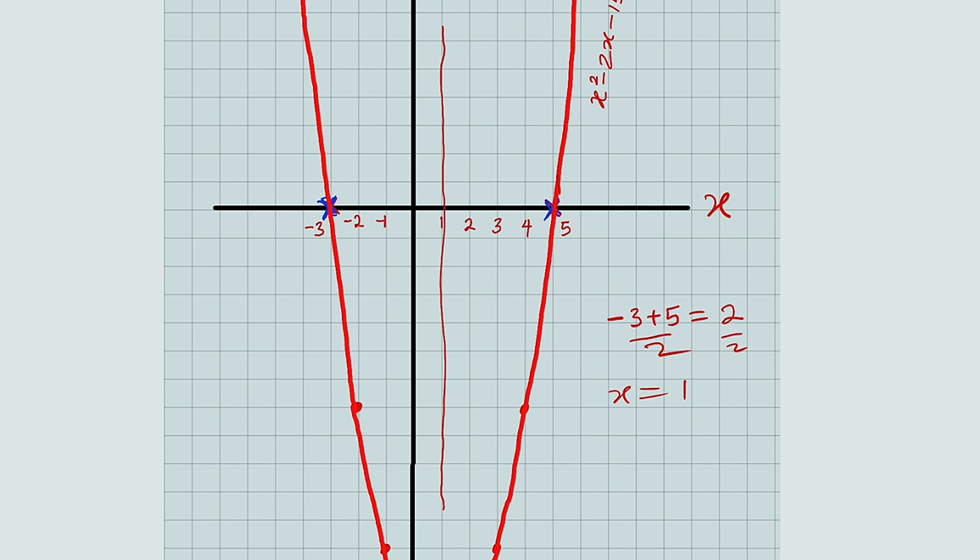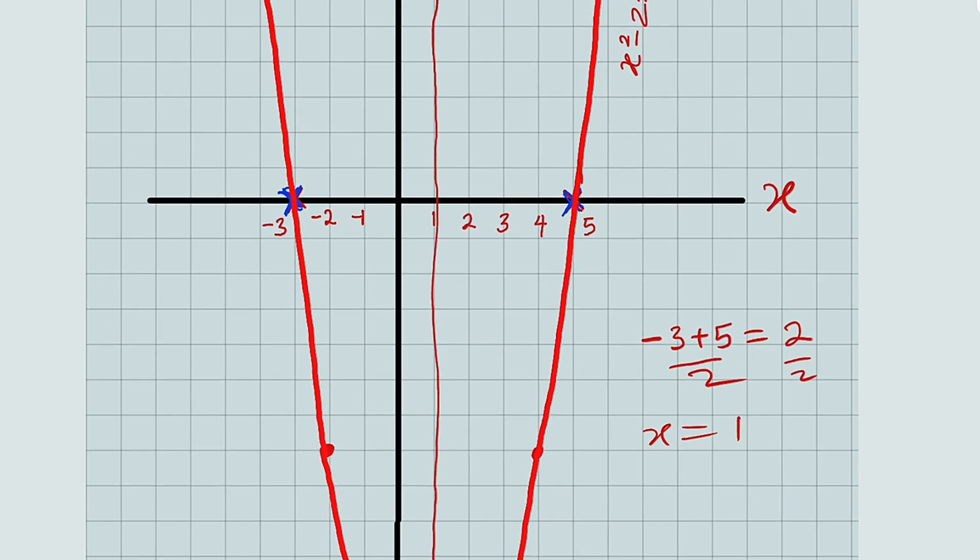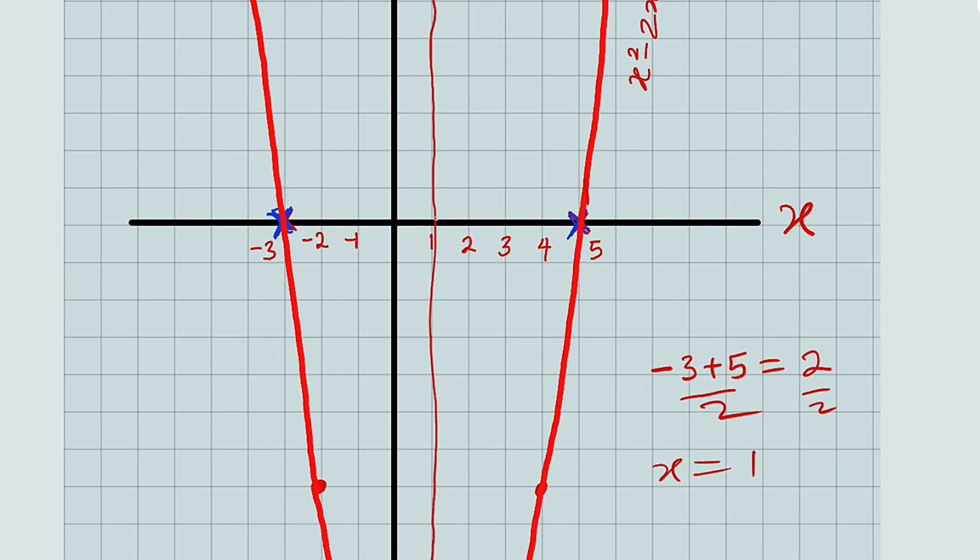So the reason why Po-shen Loh decided to take this value is that if you count from this line to this root and from the same line to the other root, you're going to obtain the same units. Let's count 1, 2, 3, 4. From the line of symmetry to our roots to the right-hand side is 4 units. And if you count to the left-hand side, 1, 2, 3, 4.